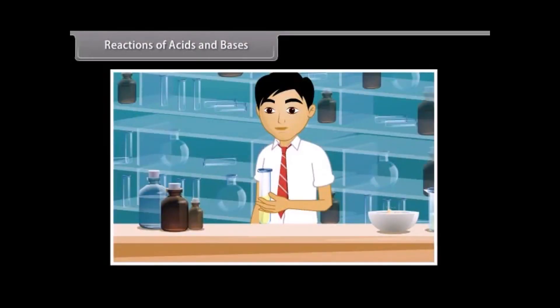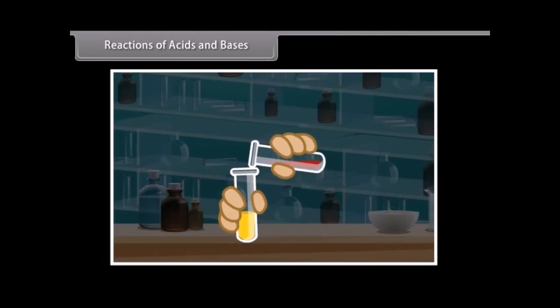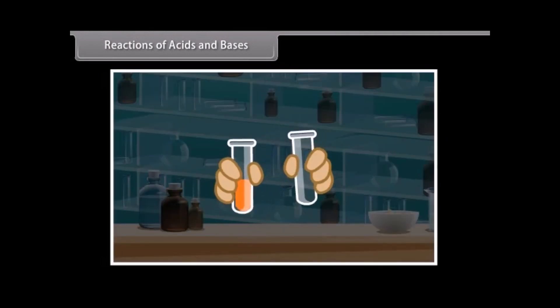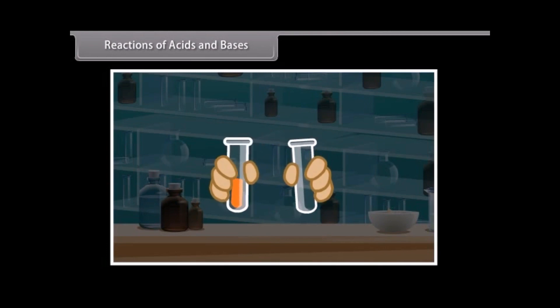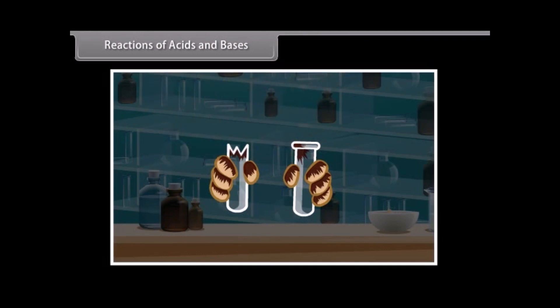Reactions of acids and bases. Let us go back to where Gaurav felt the mixing beaker hot. When acid is mixed with base, it produces heat. This may cause the mixture to splash out, which may cause burns. Also, the glass container may break because of excessive local heating. So we must be careful while handling acids and bases.